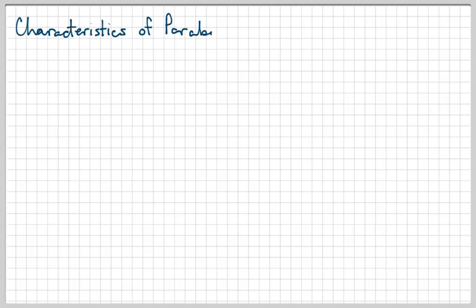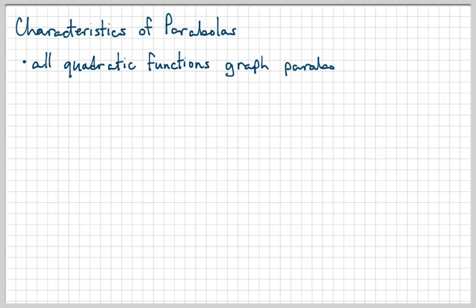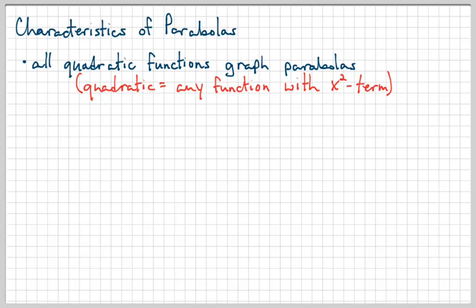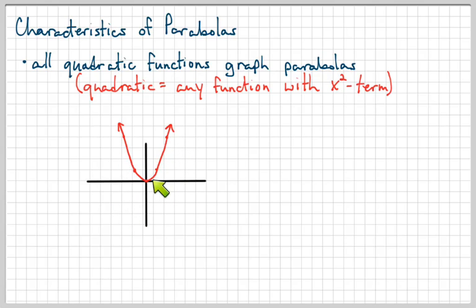In this lesson we're going to look at some characteristics of parabolas, and we're going to learn how to draw a parabola without having to plug in all different X's and generate a whole bunch of points. First of all, let's remember that all quadratic functions graph parabolas — by quadratic I mean something that has an X squared term and nothing higher. A parabola basically looks like a U-shaped or bowl-shaped graph, and it has a bending place called the vertex.